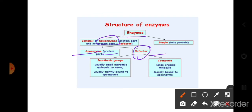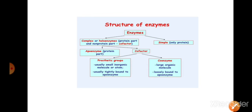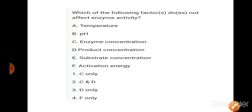The cofactor, if tightly bound — whether inorganic or organic — when inorganic it is called a prosthetic group. When the nature of the molecule is organic, we call it a coenzyme.